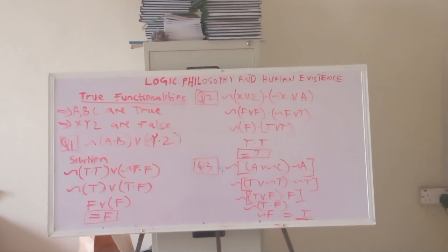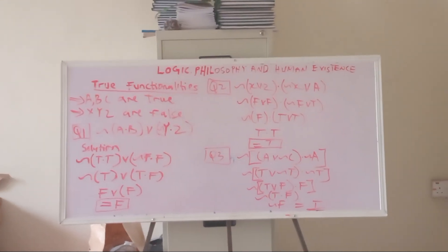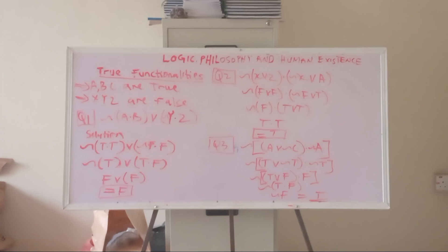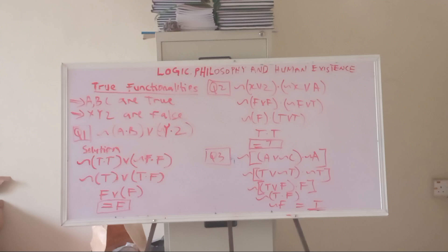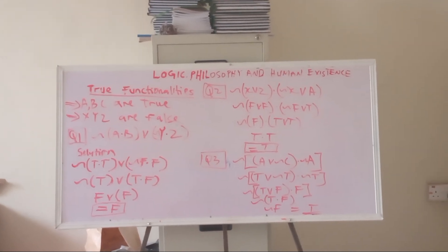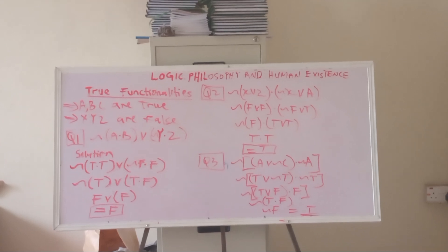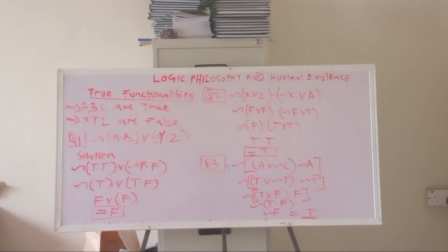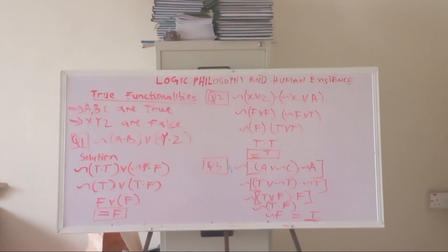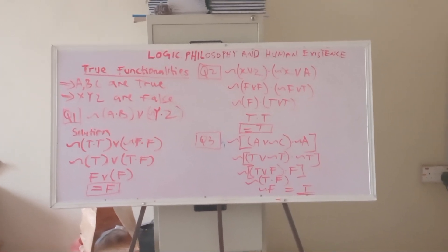The first step is to convert the statements into true or false. Since a and b are true, you have ¬(T ∧ T) ∨ (¬F ∧ F). After converting, apply the laws governing the dot (AND), wedge (OR), and coil (NOT). Solve the brackets first — T ∧ T is true.